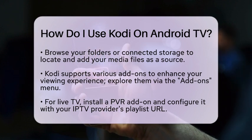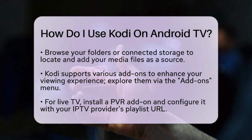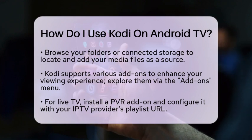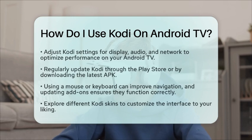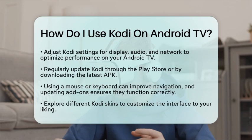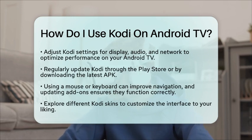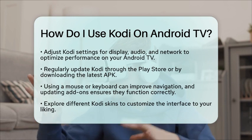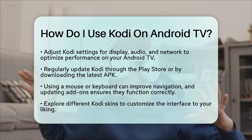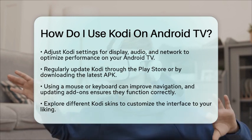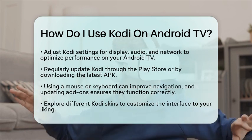Adjusting the settings for your Android television is also important. While Kodi runs smoothly on most Android televisions, some features, like audio pass-through, depend on your device's firmware. You can customize Kodi settings for display, audio, and network to optimize performance.